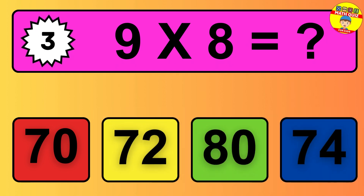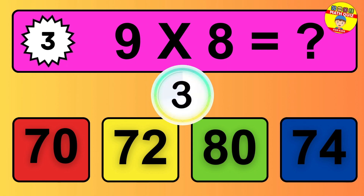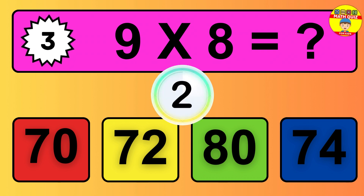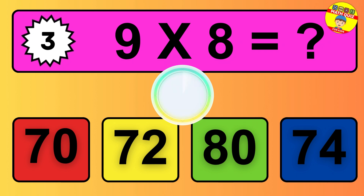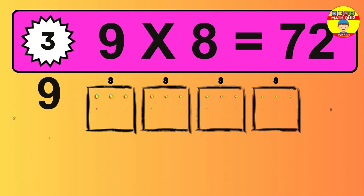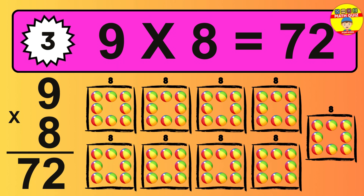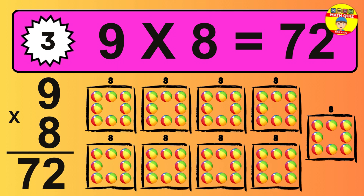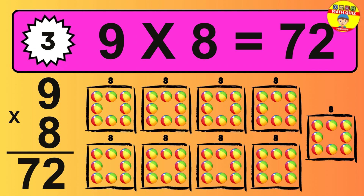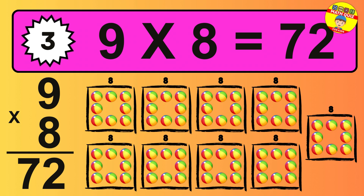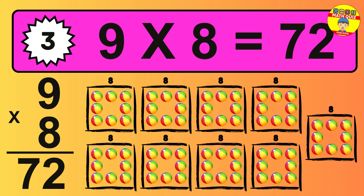Question 3. 9 times 8 equals what? The answer is 9 times 8 is 72. To calculate, we have 9 groups with 8 balls each one. So how many balls do we have? 72 balls.